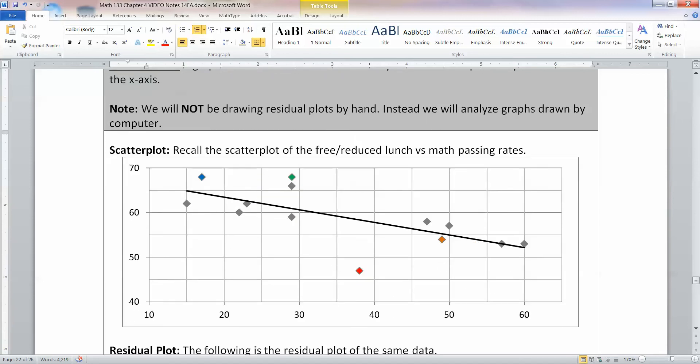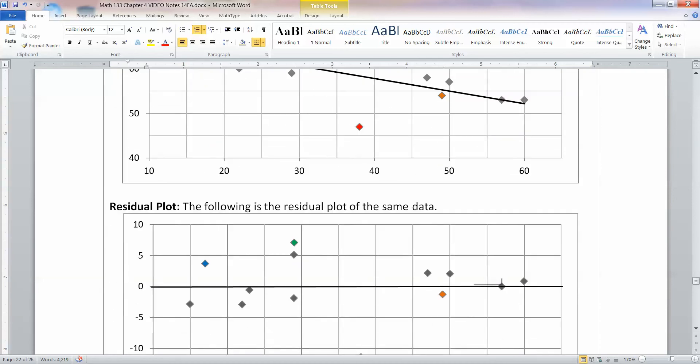So here we have the free-reduced lunch data set with the math passing rates. And I've highlighted a few of the dots so you can kind of see them in different colors. So I have a blue dot up here and then a green dot, a red dot, and an orange dot. This is the same data set we saw earlier. And now we want to consider a residual plot.